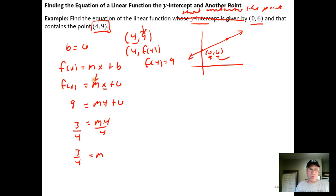I'll come back over to the equation and update m. So I'm going to get f(x) equals 3 fourths of x plus 6. And there's my equation in slope intercept form.